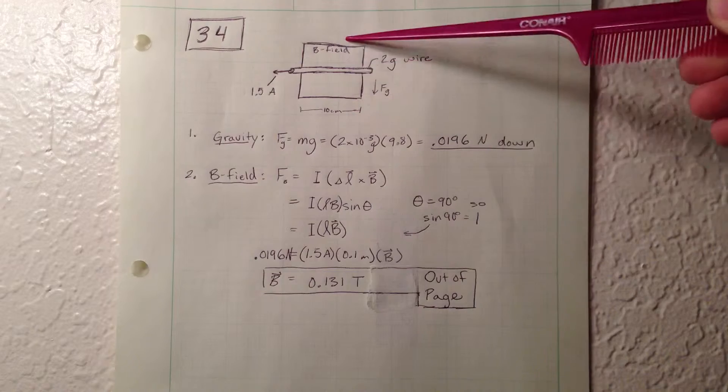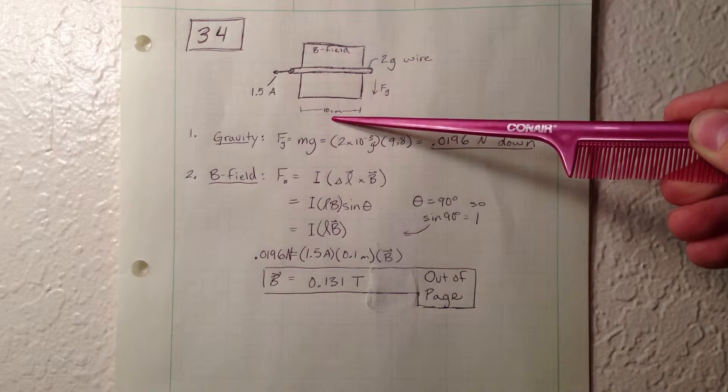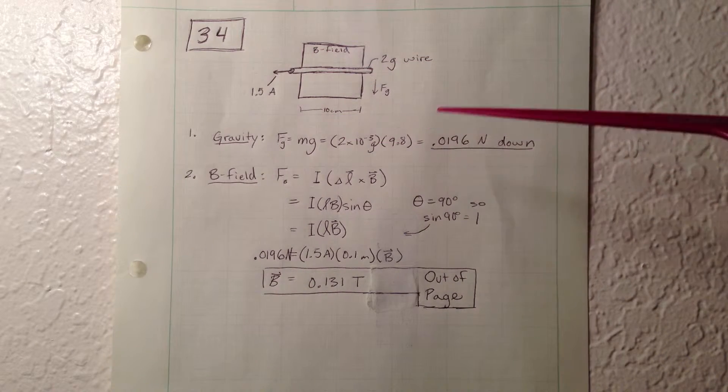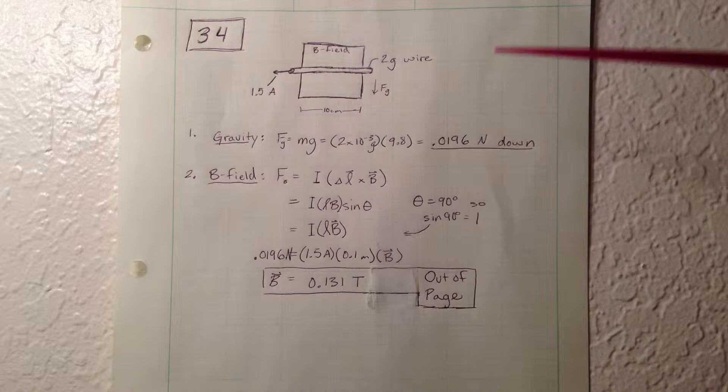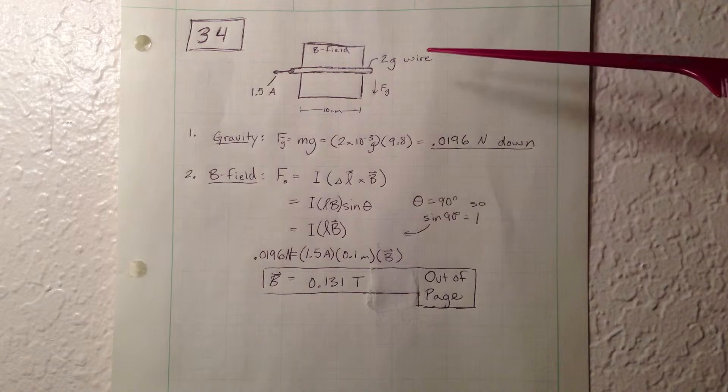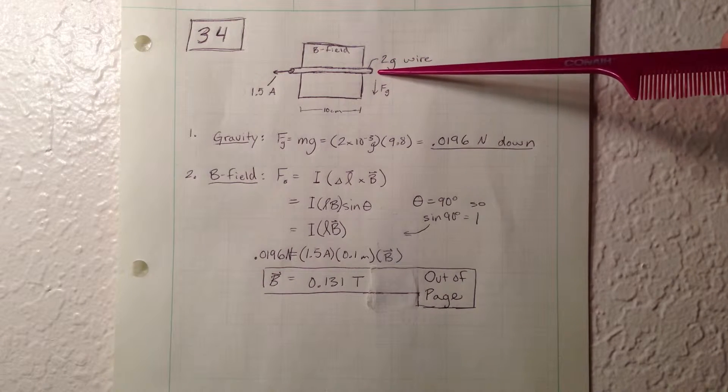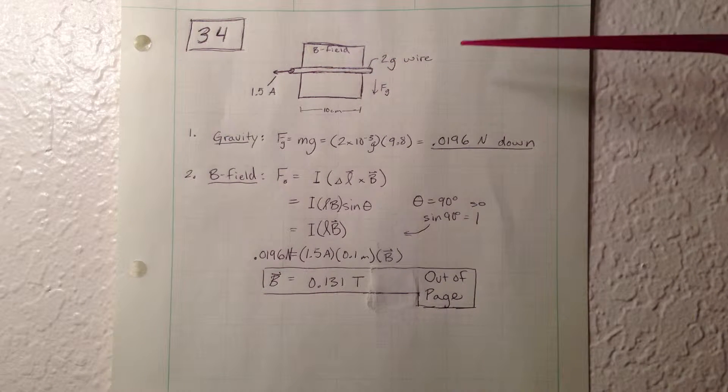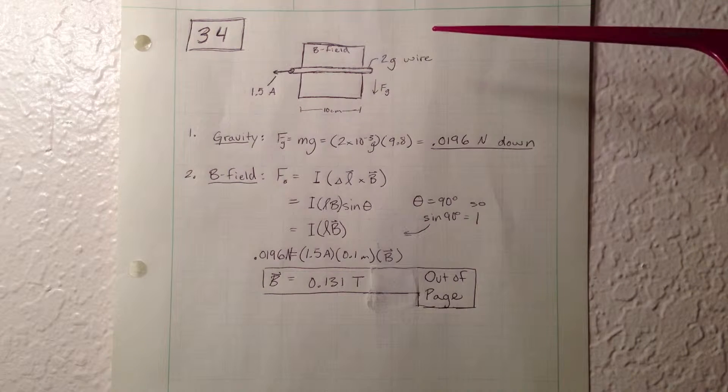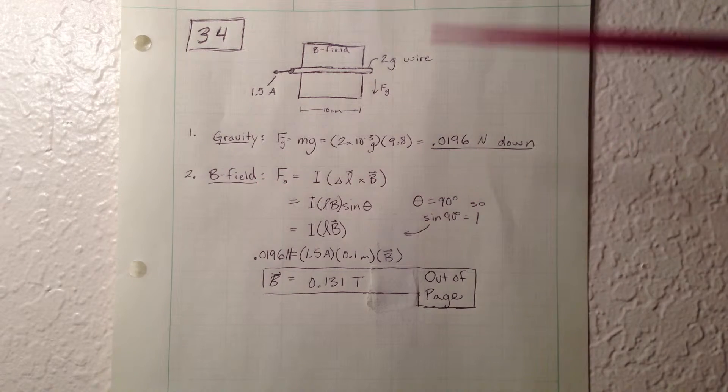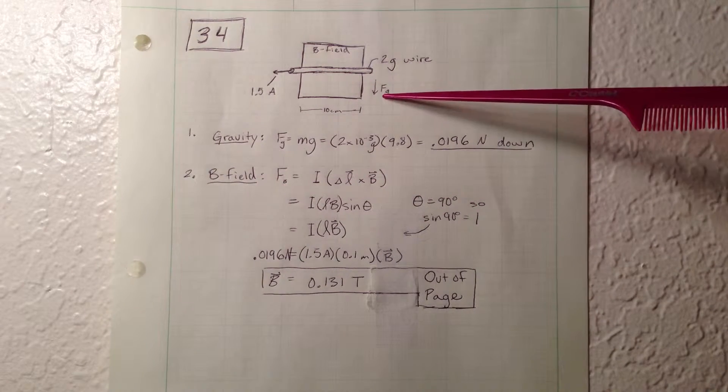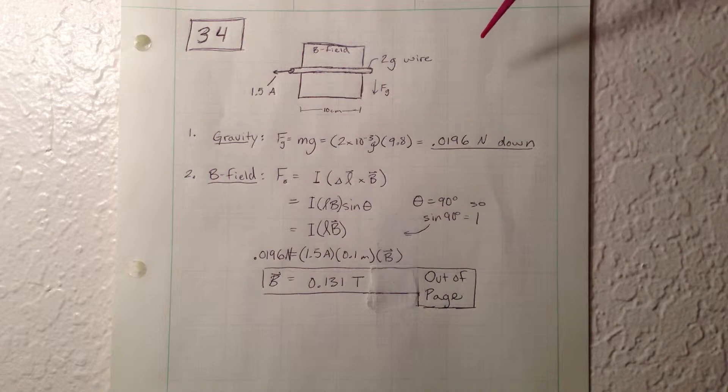There's also a B field engulfing the wire that's 10 centimeters wide. The problem asks us to find the magnitude and direction of the B field that would cause this wire to levitate. In other words, it's asking us to find the force caused by the B field that will counteract gravity, which I drew here because gravity is in the downward direction.